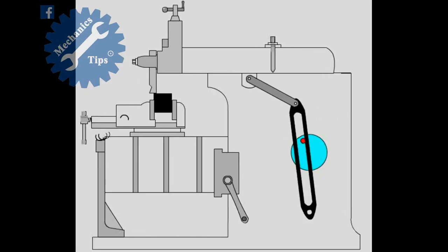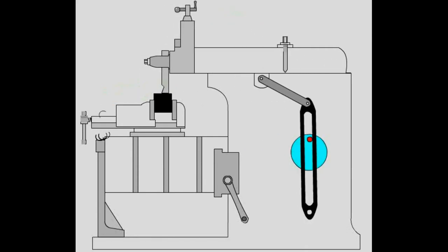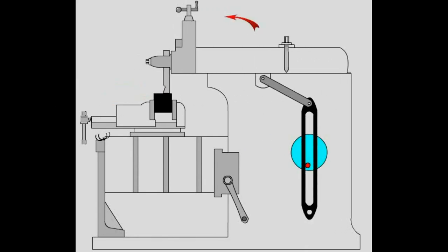A shaper is a type of machine tool that uses linear relative motion between the workpiece and a single point cutting tool to machine a linear toolpath.